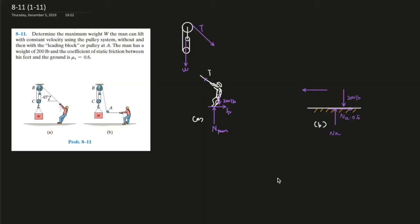I can assist you or tutor you more. If you have more questions, just email me. The problem says: determine the maximum weight W that a man can lift with constant velocity using the pulley system, without and then with the leading block, which is pulley at A over here. The man has a weight of 200 pounds, and the coefficient of static friction between his feet and the ground is mu equals 0.6.